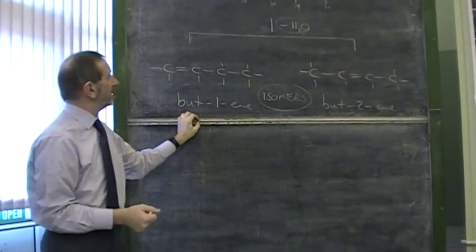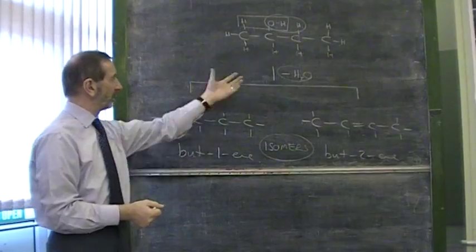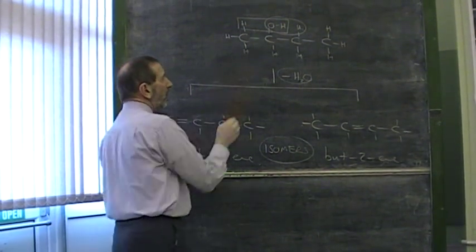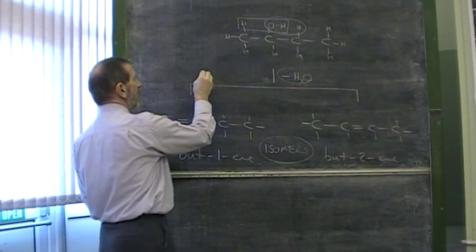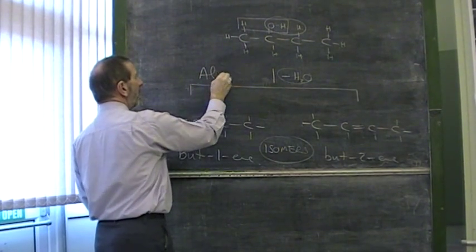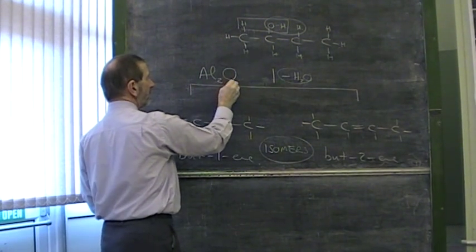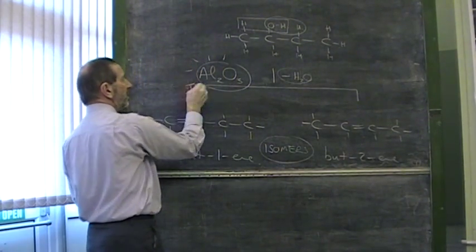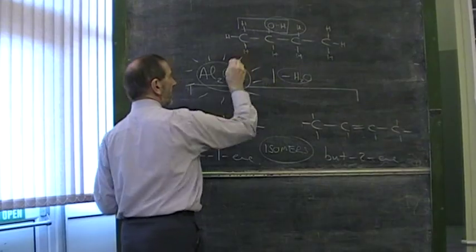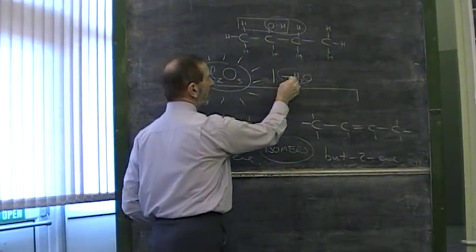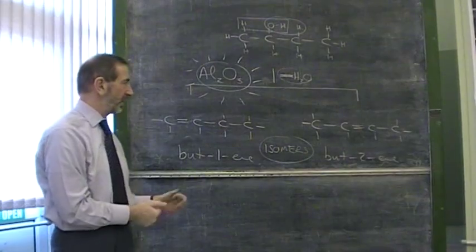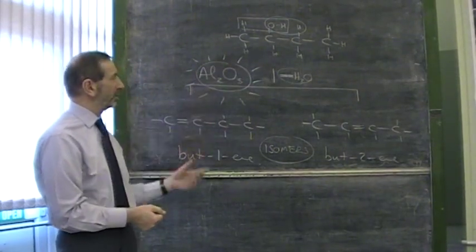One thing which I didn't mention was, how is this actually achieved? How can you remove water? You must remember that the chemical which is able to remove water is aluminum oxide. Aluminum oxide is a compound you're expected to know as having the ability to remove water. Something described as a dehydrating agent that effectively dries out the alcohol.